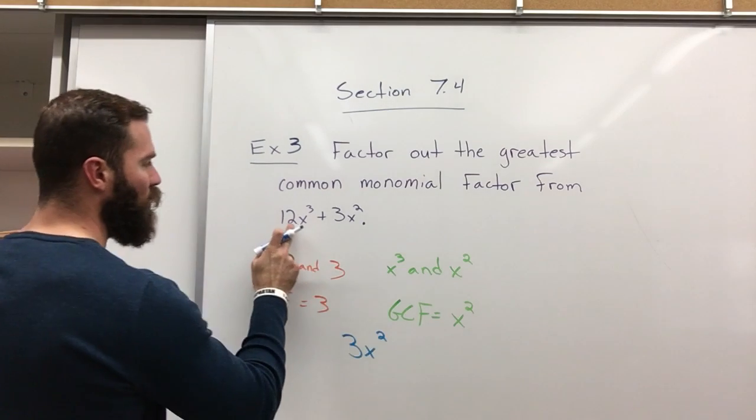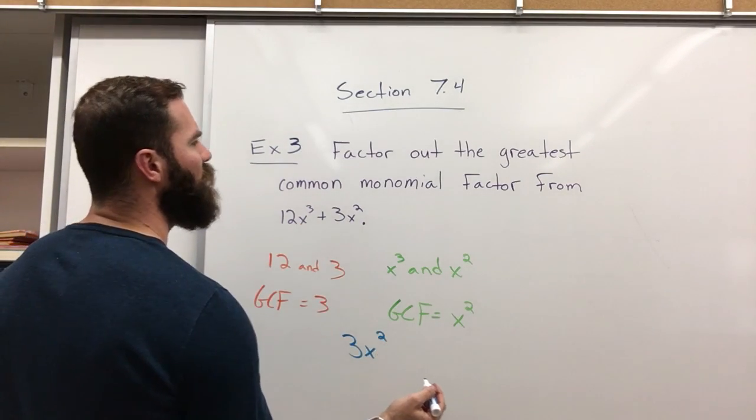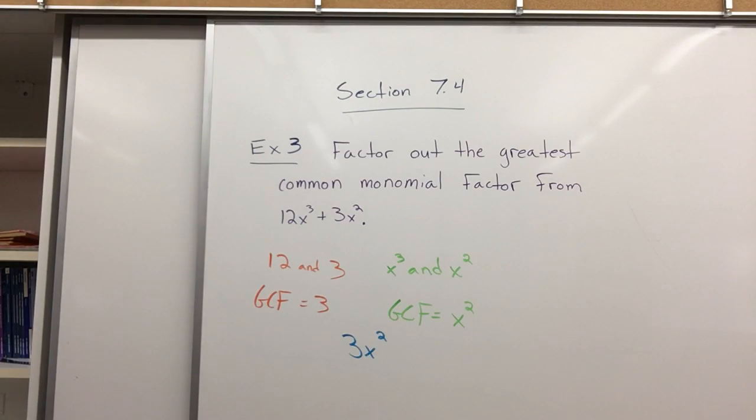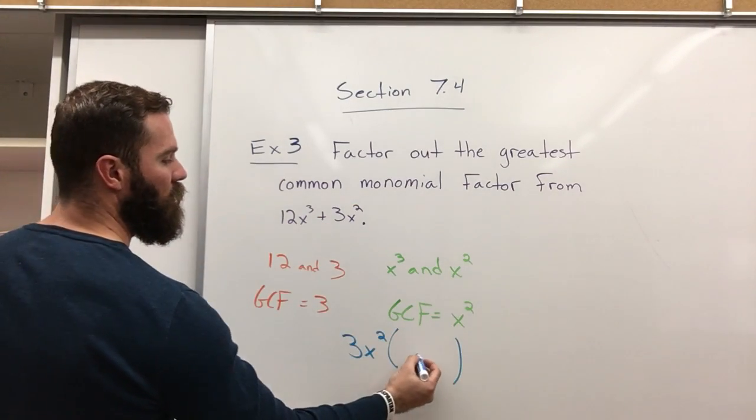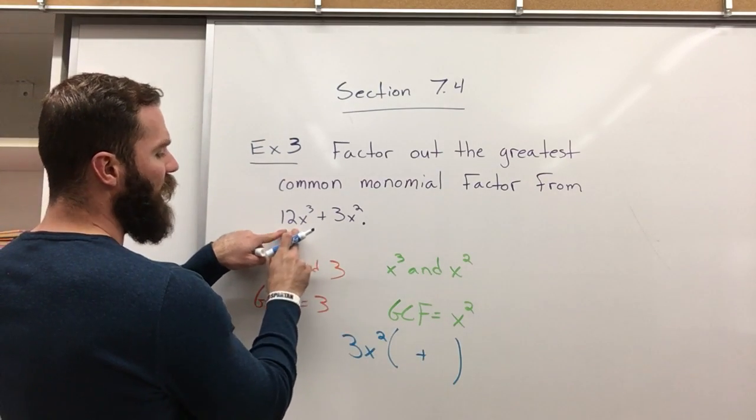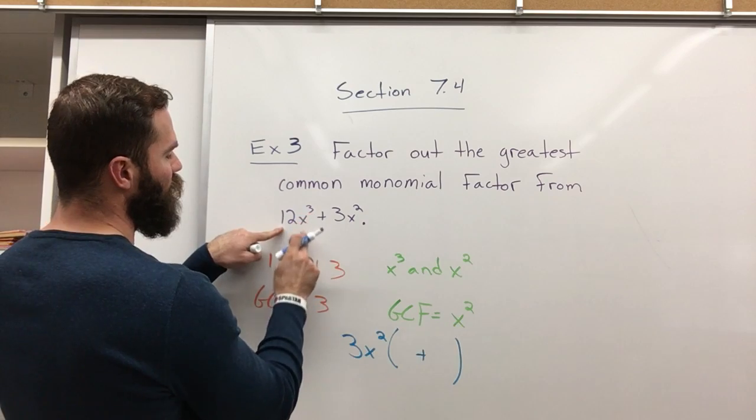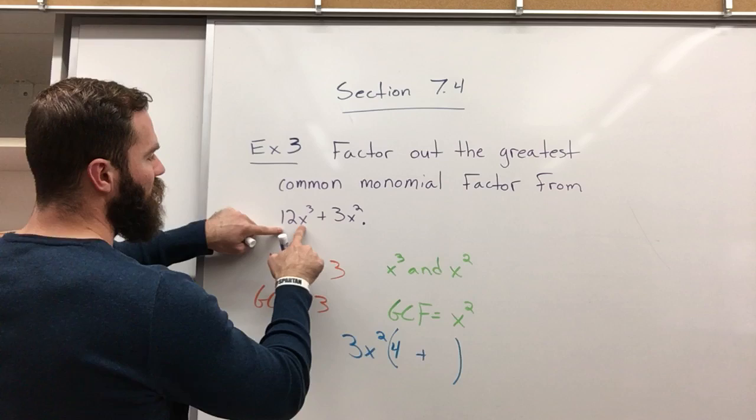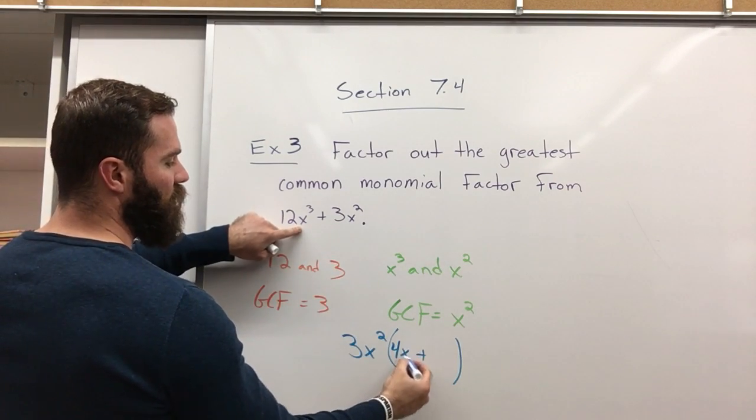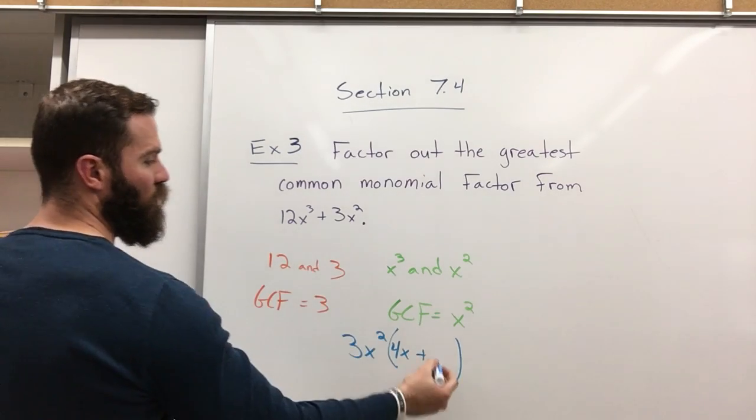So, if we pull out a 3x squared, it wants us to factor out. Write the whole thing out. We factored this 3x squared out of the 12x cubed. We already know 3 goes into 12 four times, and x squared into x cubed is x. And 3x squared into 3x squared is 1.